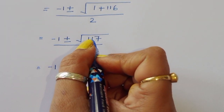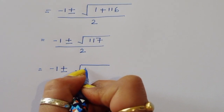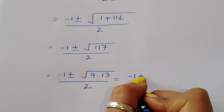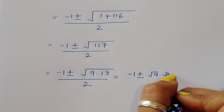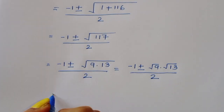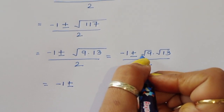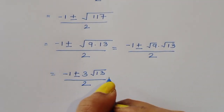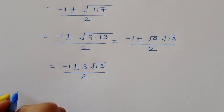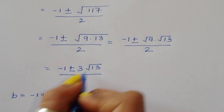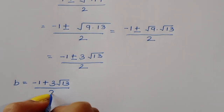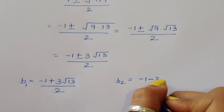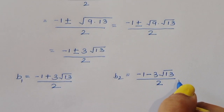Now 1 plus 116 equals 117, and 117 equals 9 times 13. So square root of 117 is 3 times square root of 13. Therefore b equals (minus 1 plus or minus 3 square root of 13) divided by 2. So b1 equals (minus 1 plus 3√13) / 2 and b2 equals (minus 1 minus 3√13) / 2.